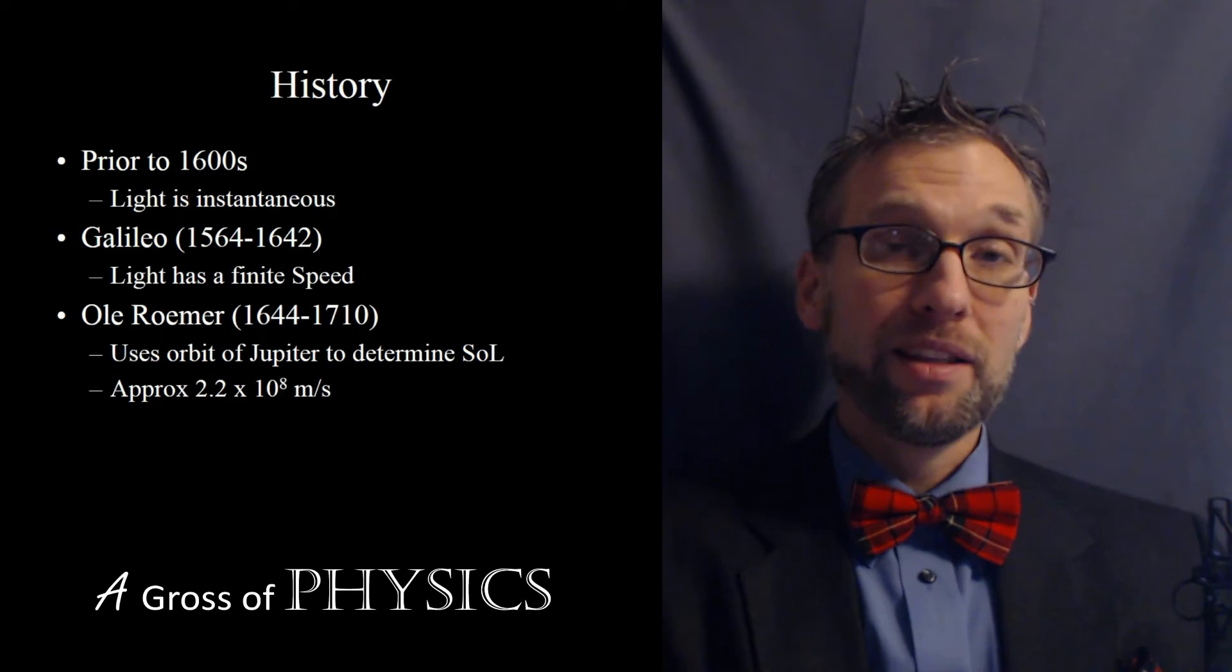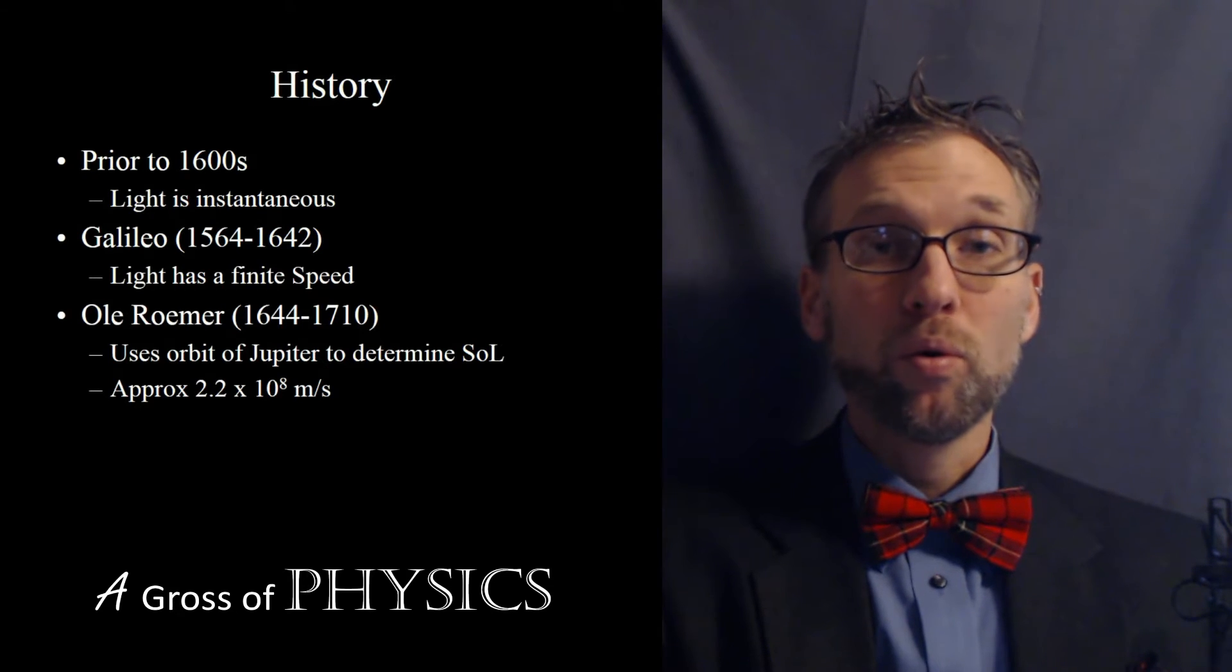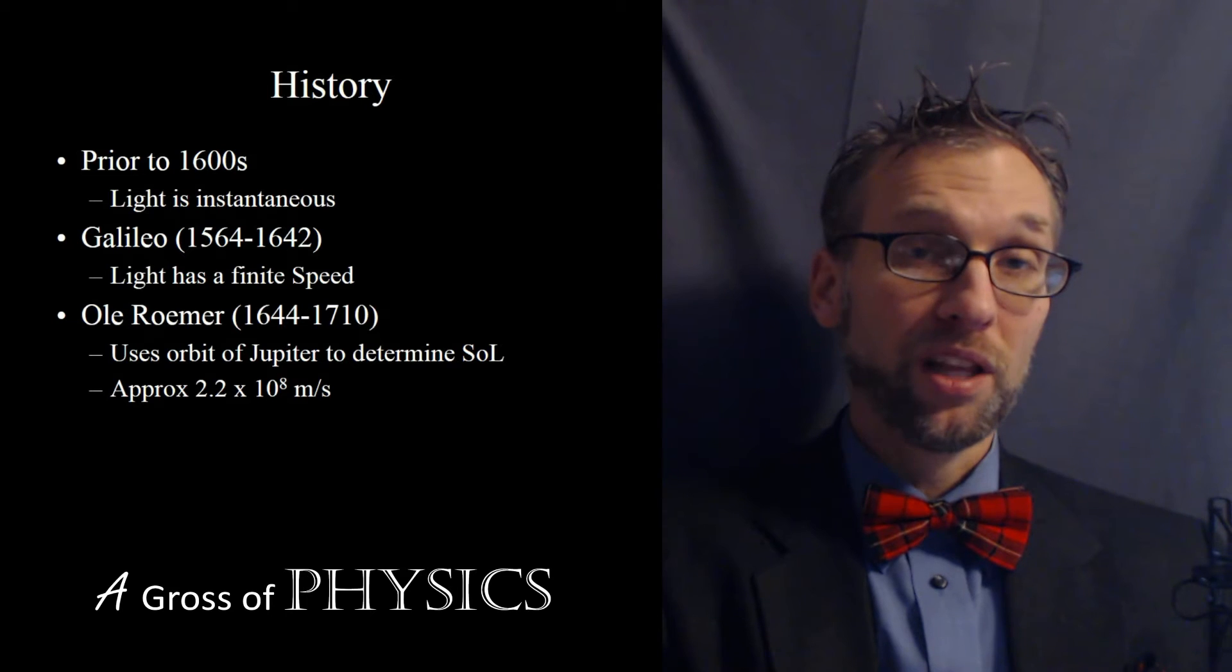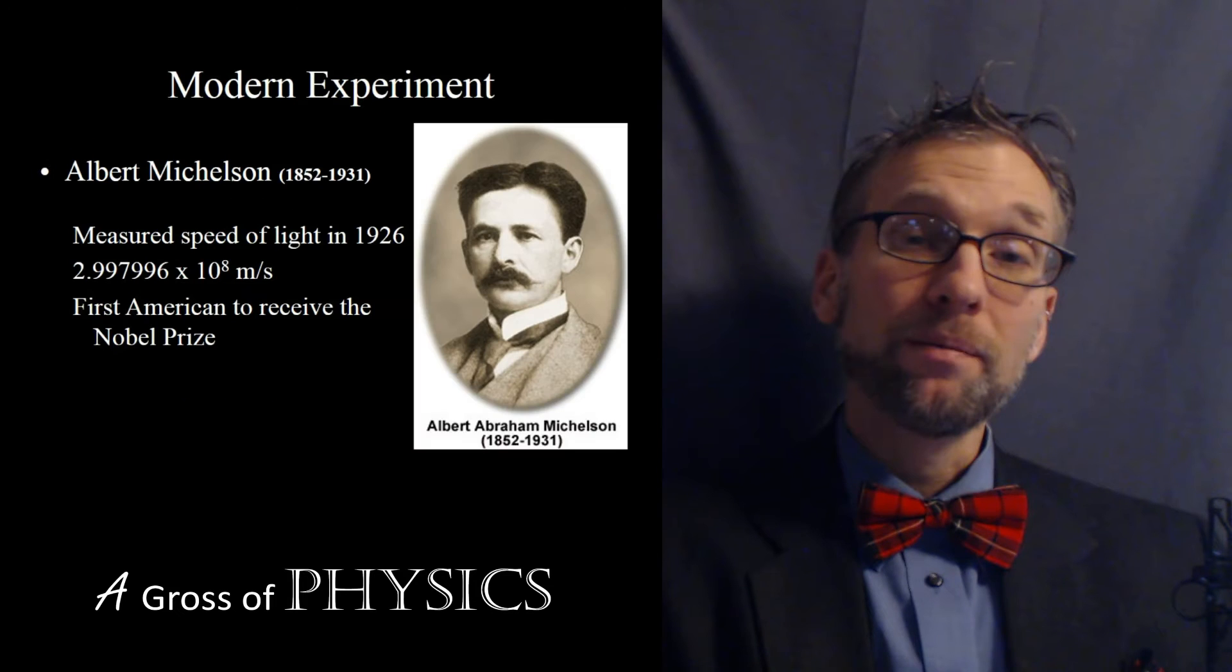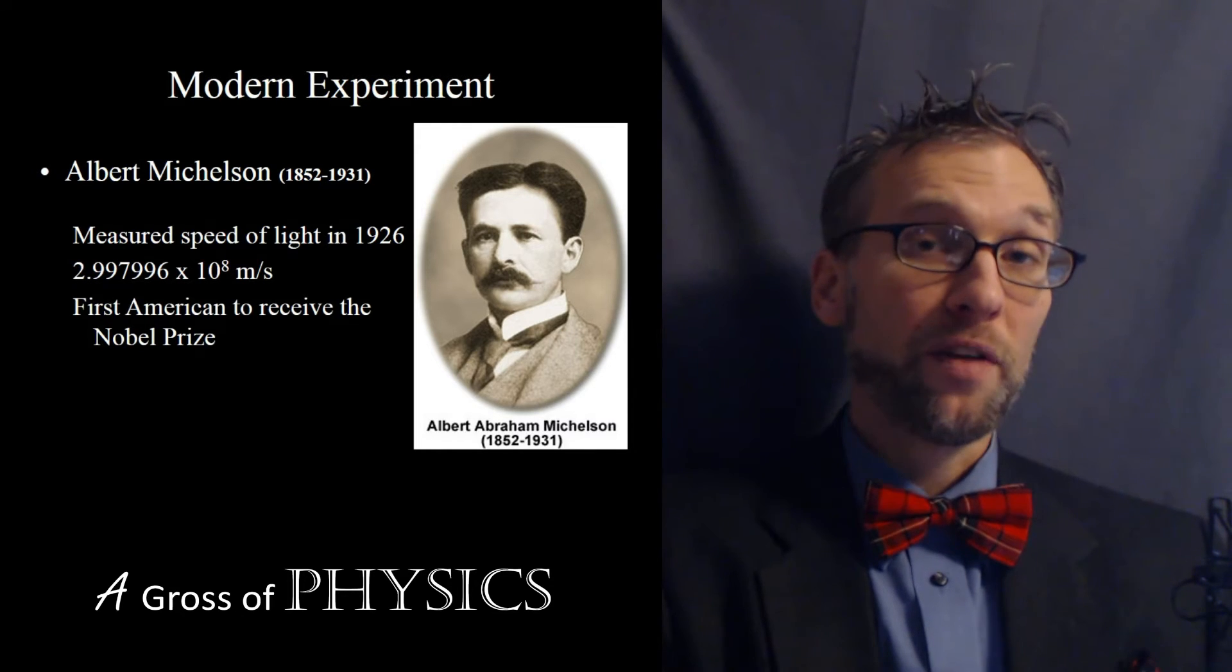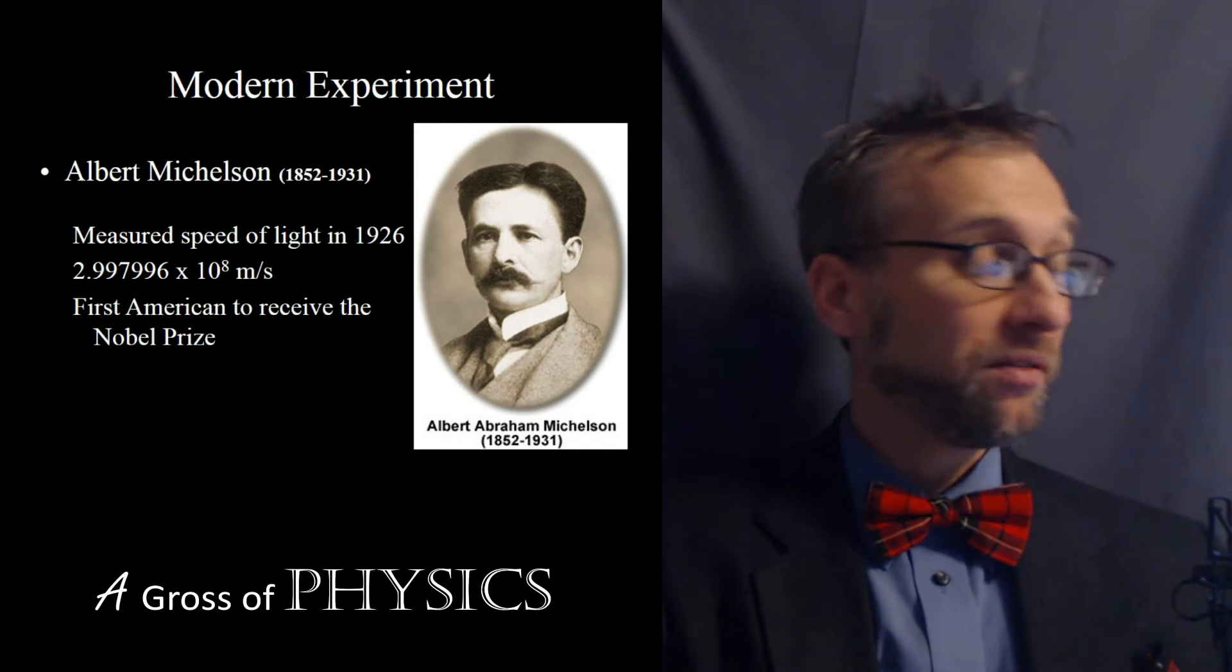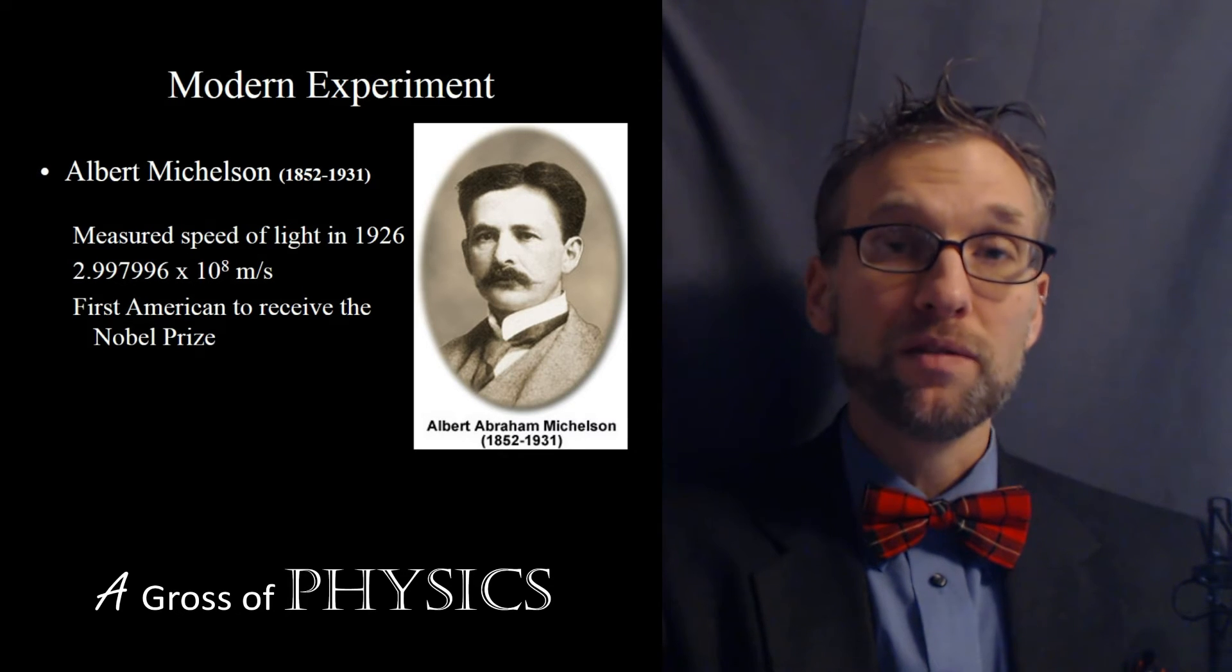But more recently, and this is in the early 1900s, we had what we now believe to be a more precise measurement of the speed of light. 2.2 is close, and like I said, it's in the same order of magnitude, but in terms of precision, it wasn't really there. So in 1926, Albert Michelson was the first to measure the speed of light to a very high degree of precision. He also found it to be quite accurate as well. So Albert Michelson was the first American to receive the Nobel Prize in Physics, and it was because of his work with the speed of light.